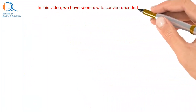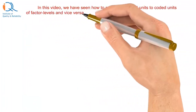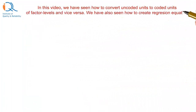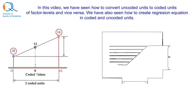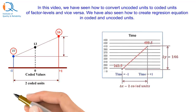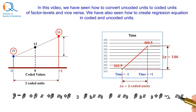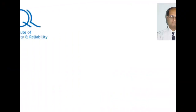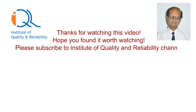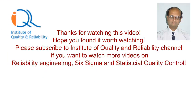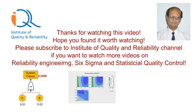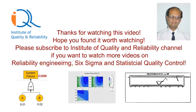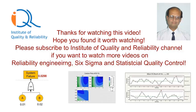In this video, we have seen how to convert uncoded units to coded units of factor levels and vice versa. We have also seen how to create a regression equation in coded as well as uncoded units. Thanks for watching this video. Hope you found it worth watching. Please subscribe to the Institute of Quality and Reliability channel if you want to watch more videos on reliability engineering, Six Sigma, and statistical quality control. Thank you.